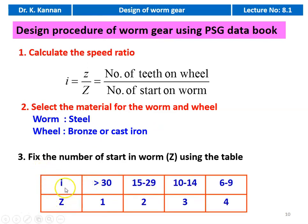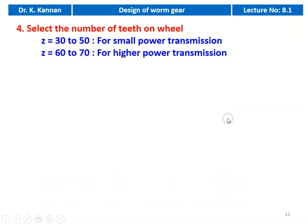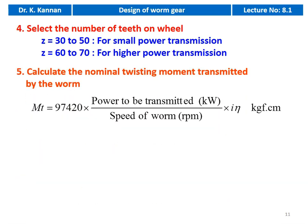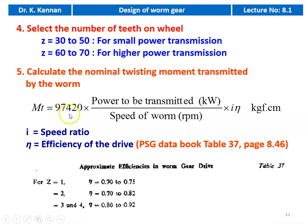From the table: when I is greater than 30, take single start; 15 to 29, two starts; 10 to 14, three starts; 6 to 9, four starts. Normally we design the worm gear drive for a speed ratio greater than 30, so single start or two starts. Select the number of teeth on the wheel: Z = 30 to 50 for smaller power transmission and Z = 60 to 70 for higher power transmission. Calculate the nominal twisting moment: MT = 97,420 × (power in kW) / (speed of worm in RPM × speed ratio × η), where η is the efficiency. The efficiency of the drive is available in table number 37, page 8.46. Depending on the number of starts, select the efficiency value unless given in the problem.